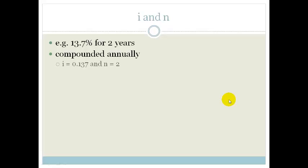But what happens if it was compounded monthly? Now you need to take into consideration that your N is going to be 12 times per year, but now there are two years. So the N is 2 times 12, which is 24. But now the interest is divided by those 12 months. So therefore the interest is 0.137 divided by 12. So that's if it's compounded monthly.